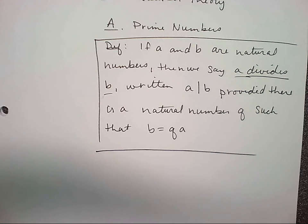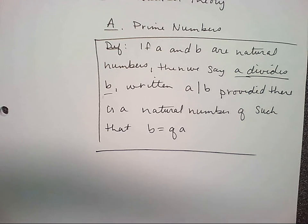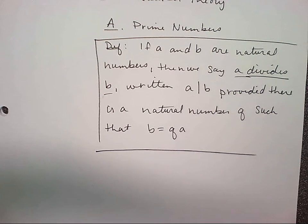Does anybody know what a natural number is? Well, examples include six, three, two. Natural numbers are the counting numbers — one, two, three, four, five, six — not zero, not negative numbers. The natural numbers are the counting numbers.